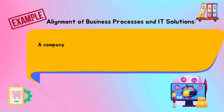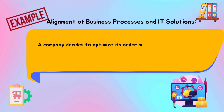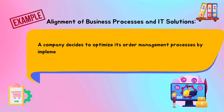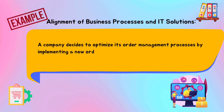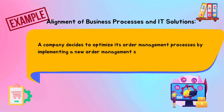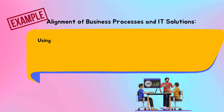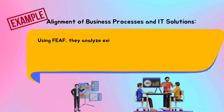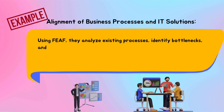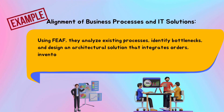Alignment of business processes and IT solutions. A company decides to optimize its order management processes by implementing a new order management system. Using FEF, they analyze existing processes, identify bottlenecks, and design an architectural solution that integrates orders, inventory management, and finance.